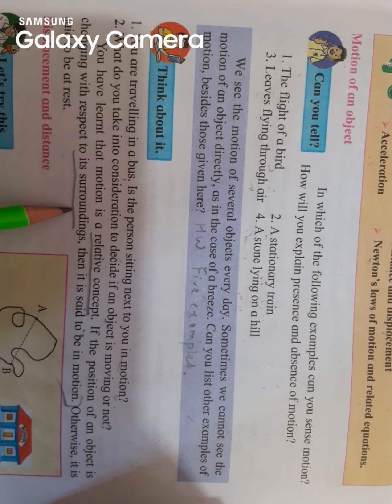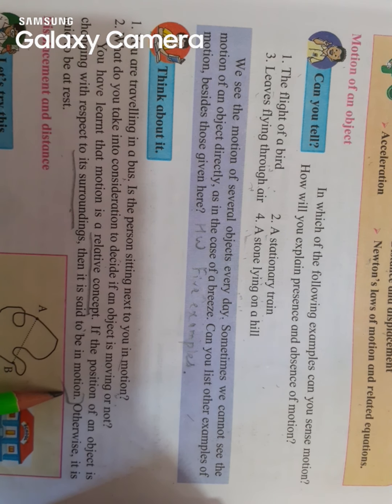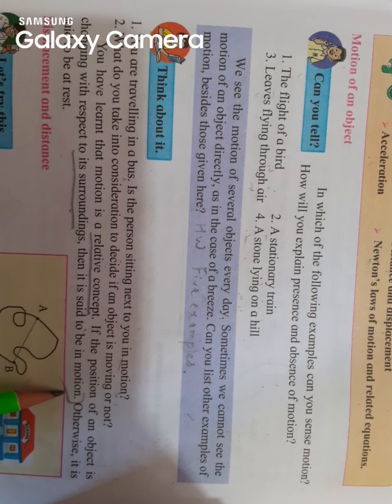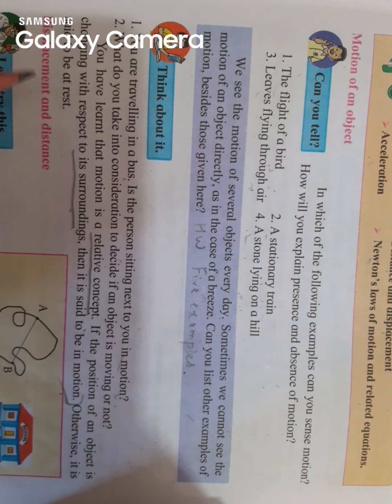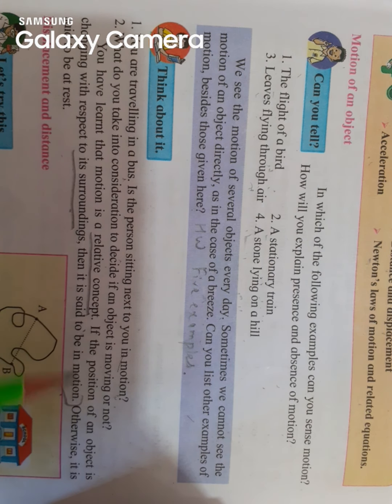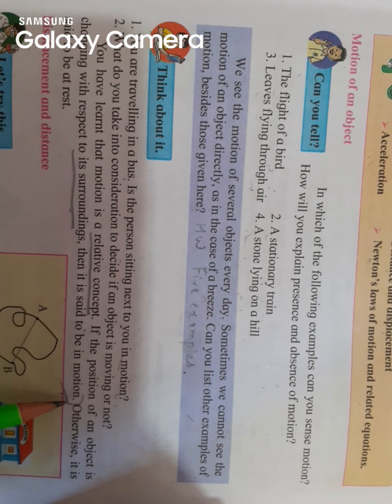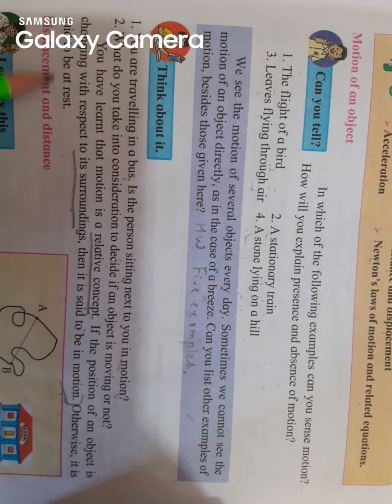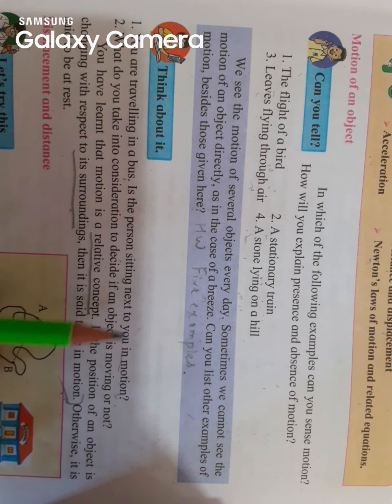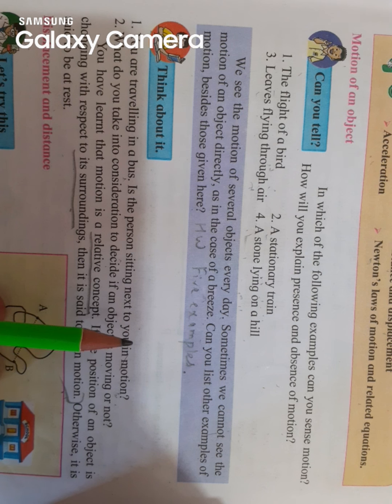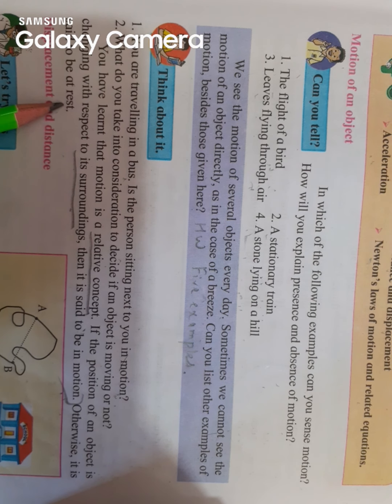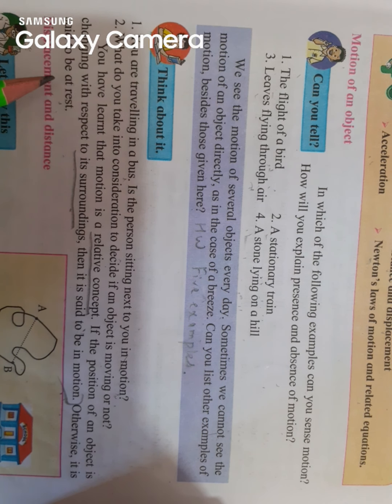If the object is there and right now it is at one particular point, but now it has changed its position from point A to point B, that means it is in motion. Otherwise, it is said to be at rest. Like this textbook is right now lying here only on the table, so the textbook is at rest. But if I change it from this position to some other position, I will say the textbook is also moving.